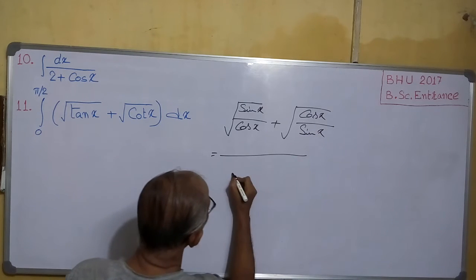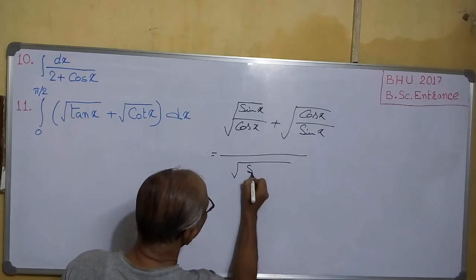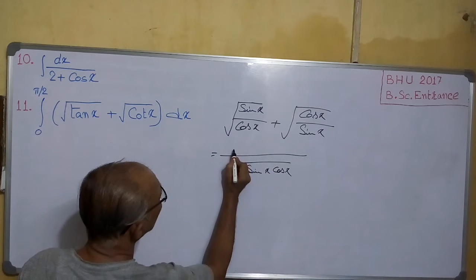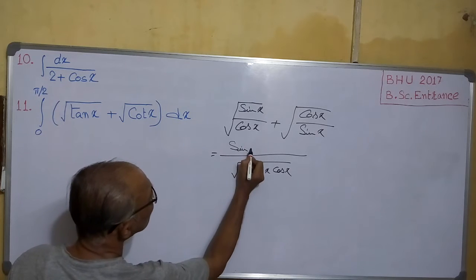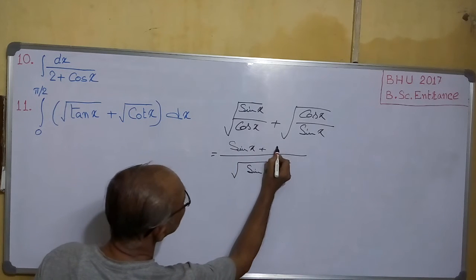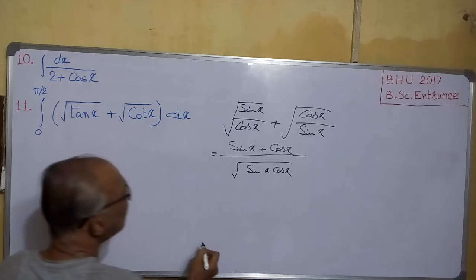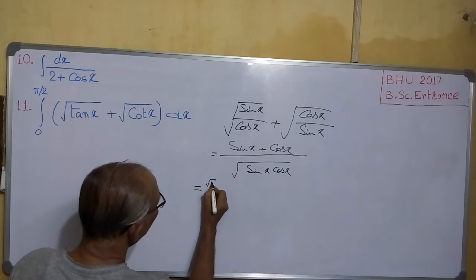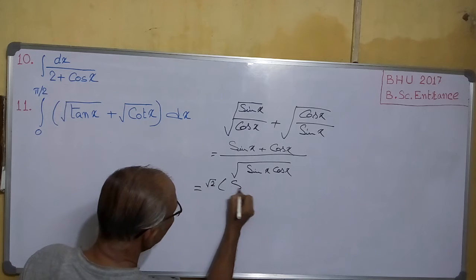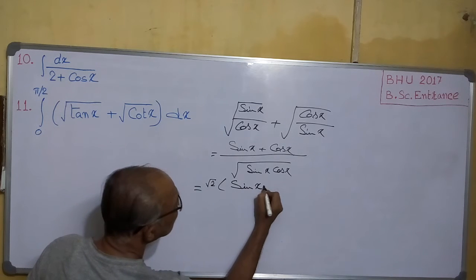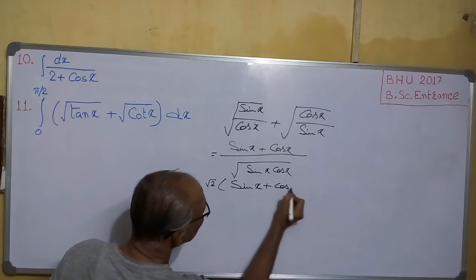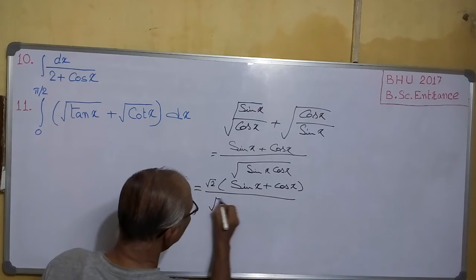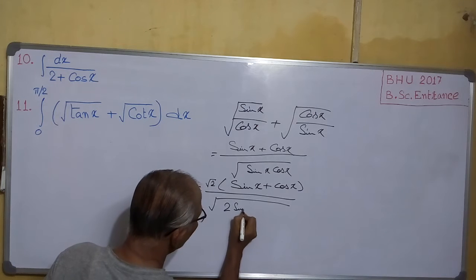If we take the LCM it will be √(sinx·cosx) in the denominator. And the numerator will become sinx + cosx. Now this equals √2 times (sinx + cosx) divided by √(2·sinx·cosx).